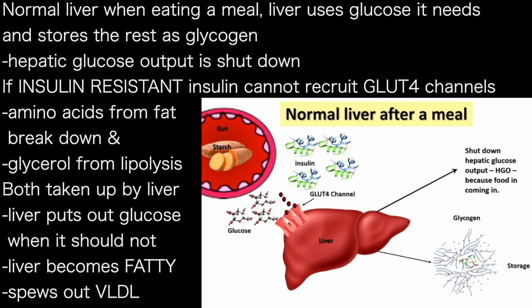When you eat a meal, glucose is coming in. The liver can use what it needs and then store it as glycogen. And because glucose is coming in, hepatic glucose output should get shut down.